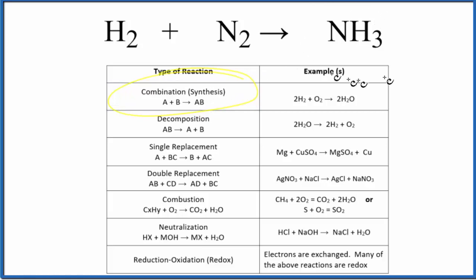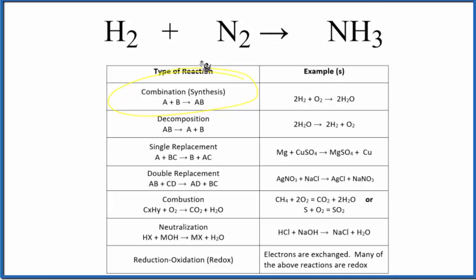This combination or synthesis reaction is really important because ammonia is used in fertilizers. A lot of the food that is grown is reliant on ammonia to help increase yields, so ammonia is a pretty important chemical. It's made in something called the Haber process: H₂ plus N₂ gives us NH₃.